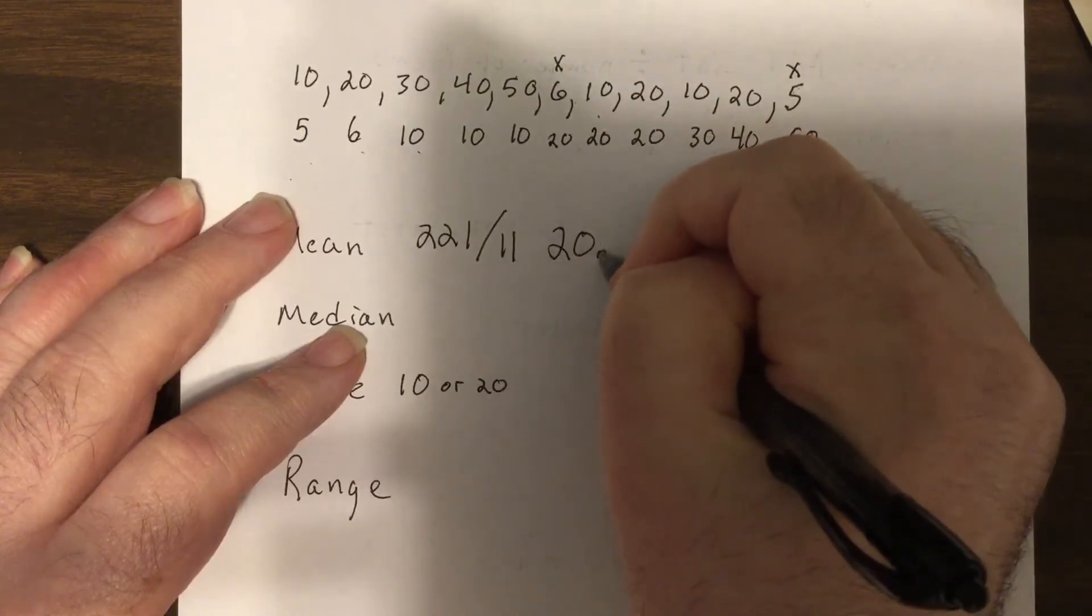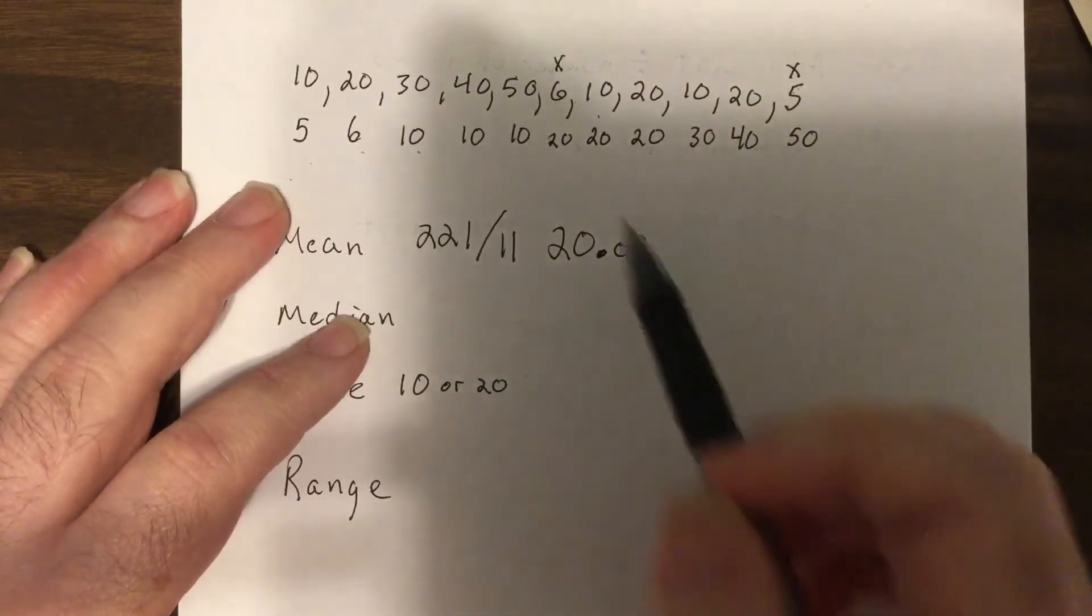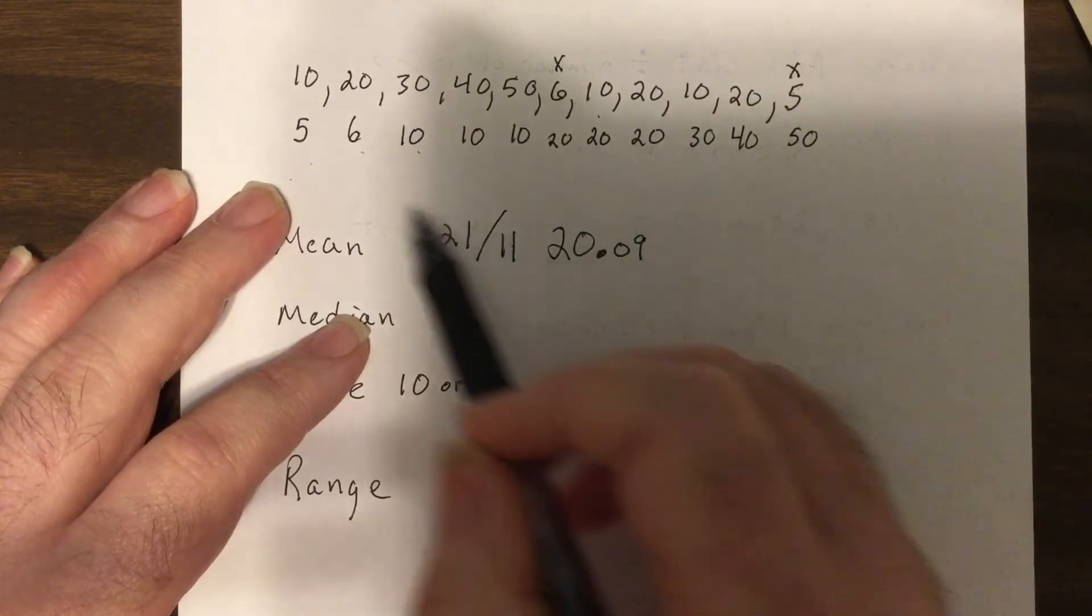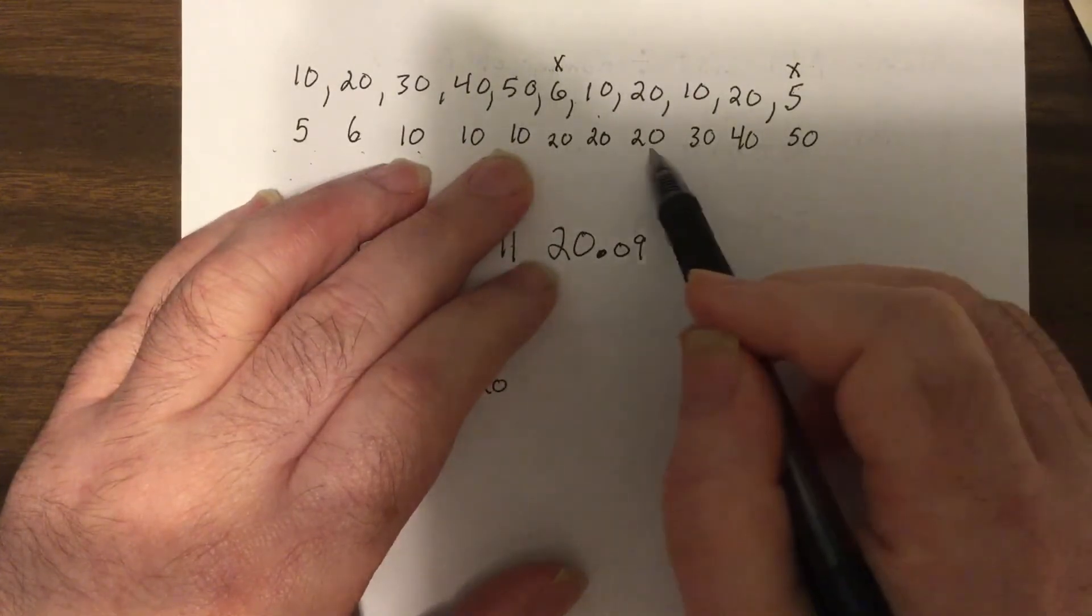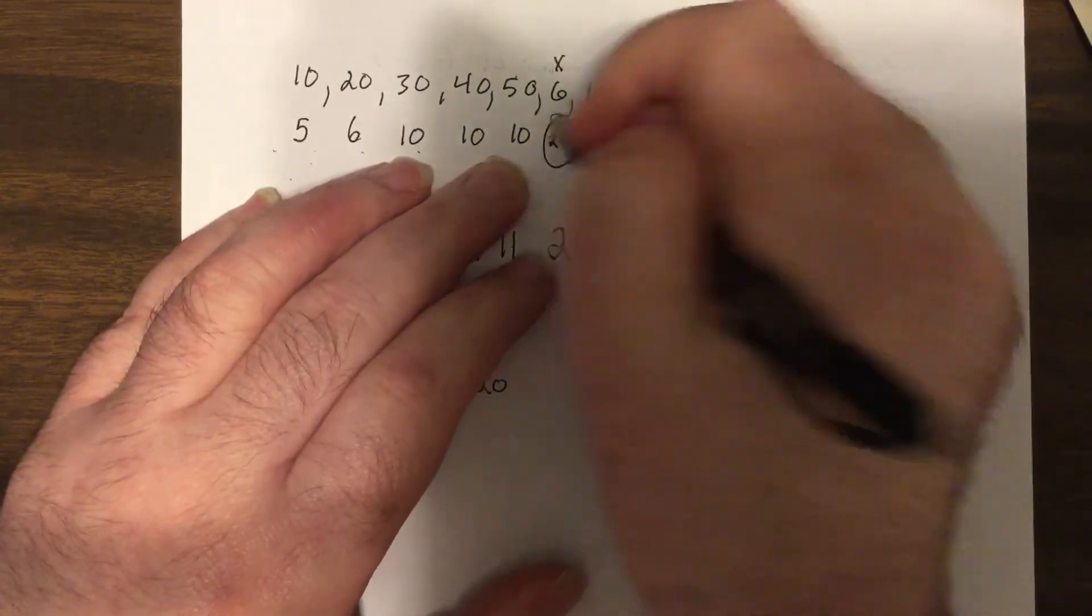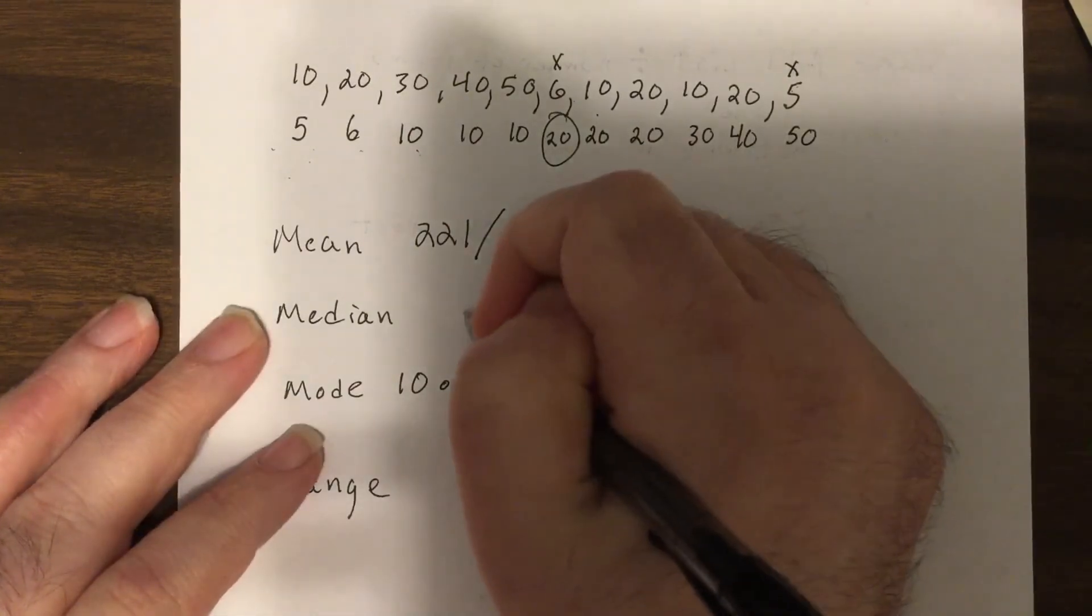I always like two places past the decimal. Now the median, there's 11 items. So 1, 2, 3, 4, 5, 1, 2, 3, 4, 5. So this is right in the middle, 5 above and 5 below. So that would be 20.